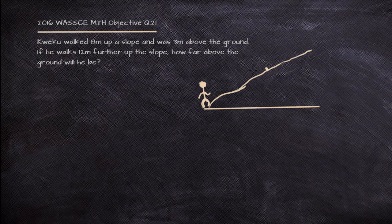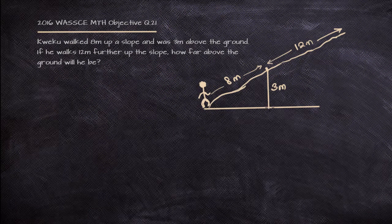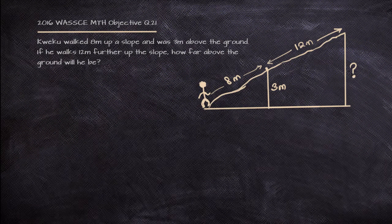Kweku walks 8 meters up the slope, and at that point he happens to be 3 meters above the ground level. We are also told that he walks 12 meters further up the slope, and we are asked to find how far above the ground he will be when he's 12 meters further up the slope.